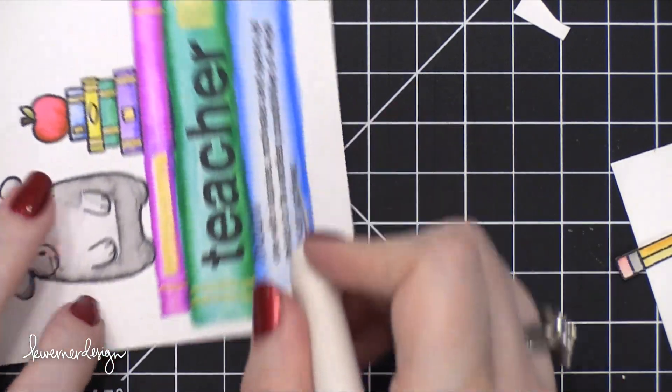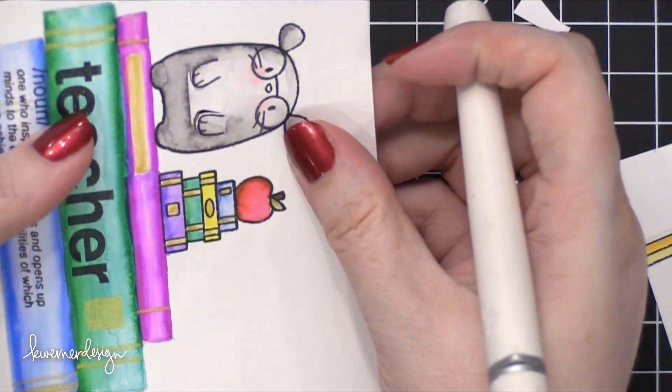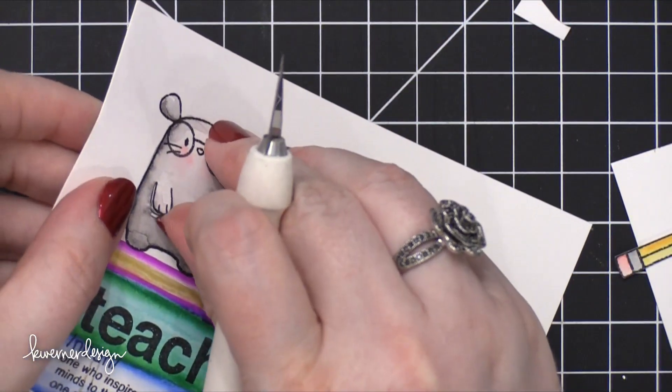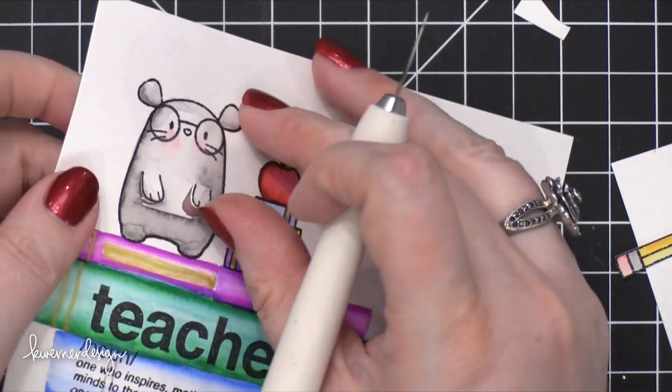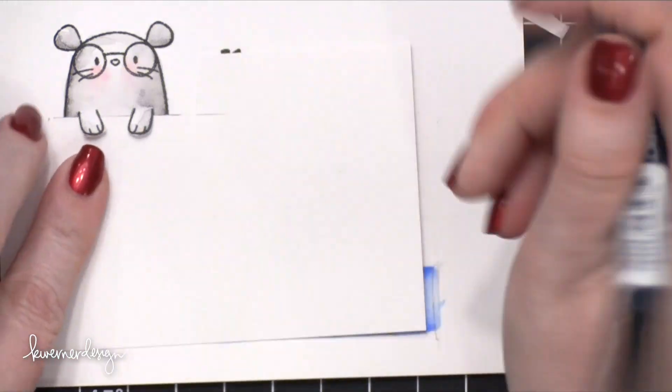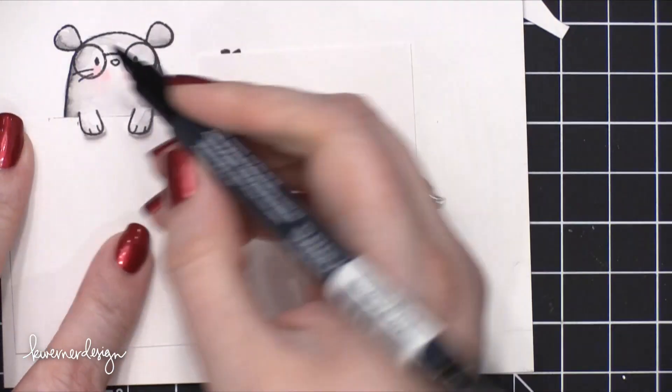Now they do have a matching die for the mouse, but I wasn't cutting out the mouse, and so I wasn't able to use that die to cut out the arms. So instead I just used an X-Acto knife, and as you can see it's not a perfect cut around those arms, but that's totally okay.